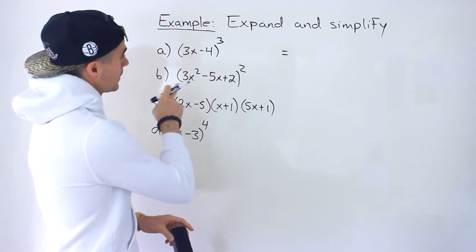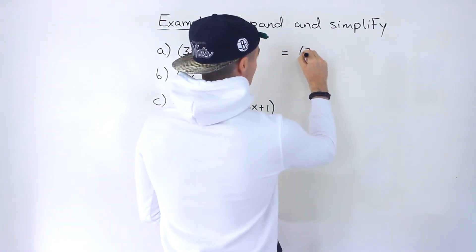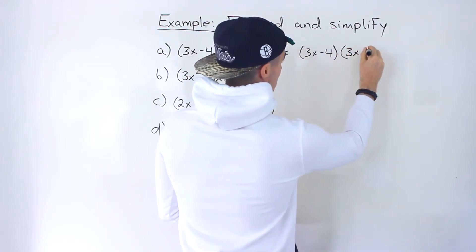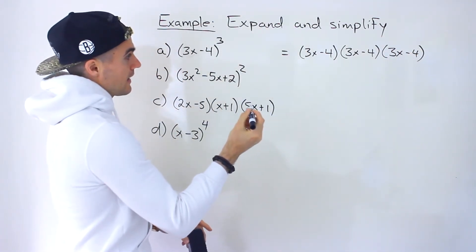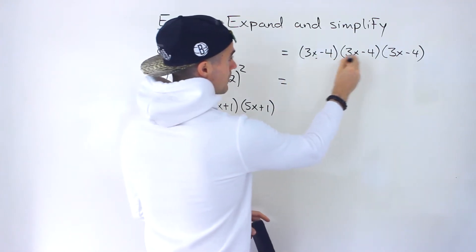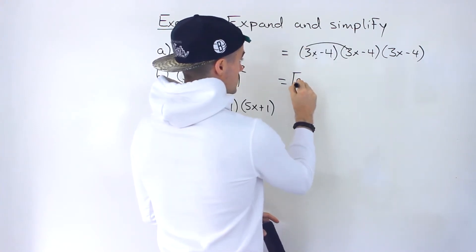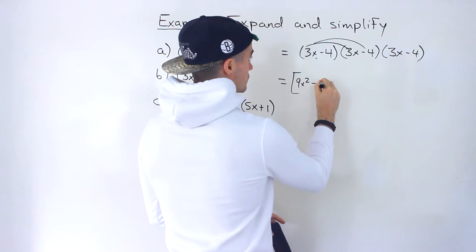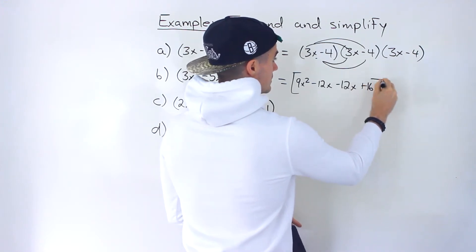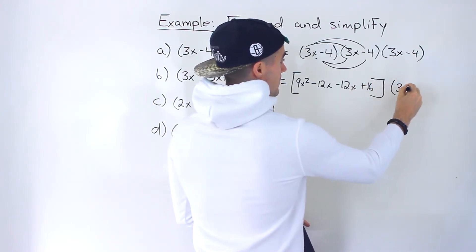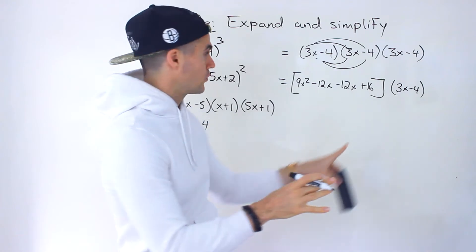Let's start off with part a. We've got the binomial 3x minus 4 to the power of 3. What I'm going to do is rewrite this as three brackets multiplying by each other. I'll start by multiplying the first two brackets: 3x times 3x gives 9x squared, 3x times negative 4 gives negative 12x, negative 4 times 3x gives another negative 12x, and then plus 16. Then we've got the 3x minus 4 on the outside.